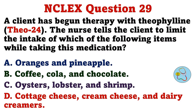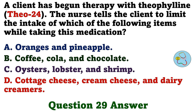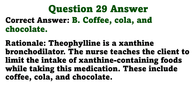A client has begun therapy with theophylline. The nurse tells the client to limit the intake of which of the following items while taking this medication? A. Oranges and pineapple. B. Coffee, cola, and chocolate. C. Oysters, lobster, and shrimp. D. Cottage cheese, cream cheese, and dairy creamers. The correct answer is B: coffee, cola, and chocolate. Theophylline is a xanthine bronchodilator. The nurse teaches the client to limit the intake of xanthine-containing foods while taking this medication. These include coffee, cola, and chocolate.